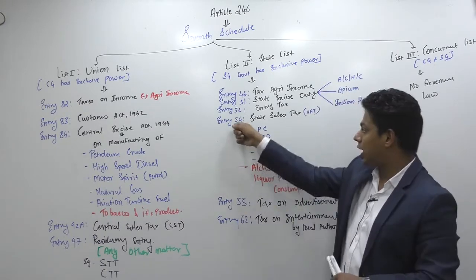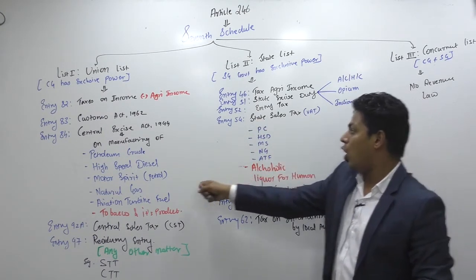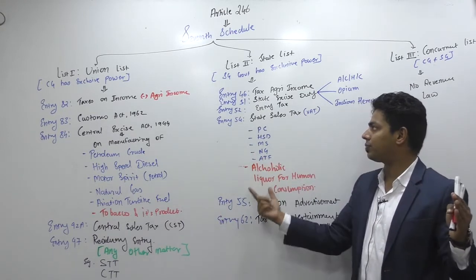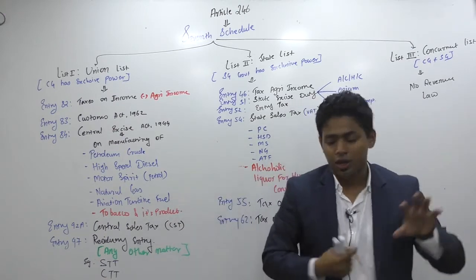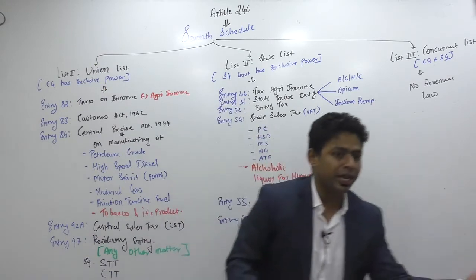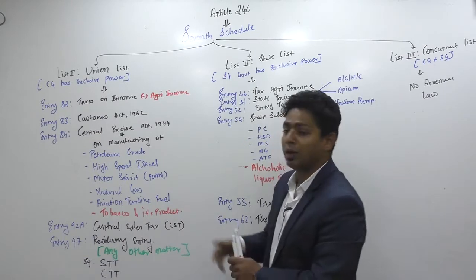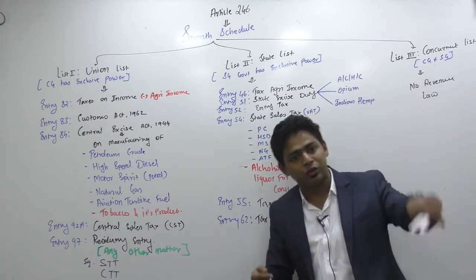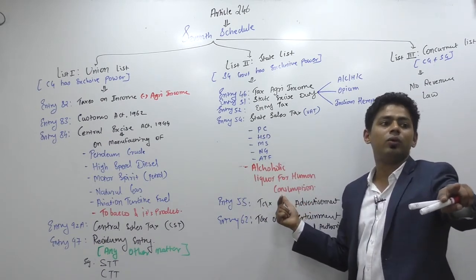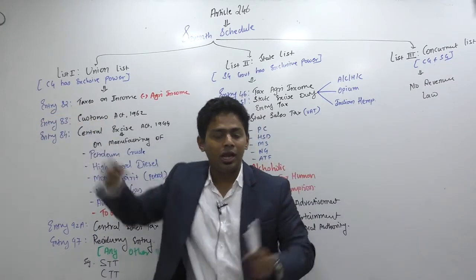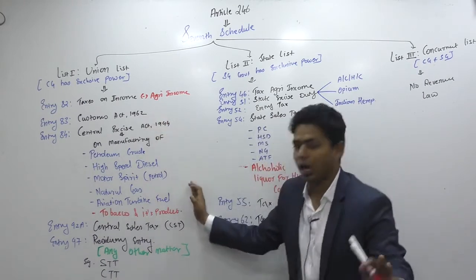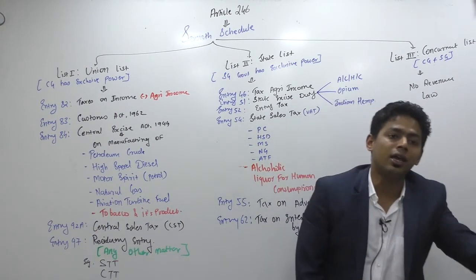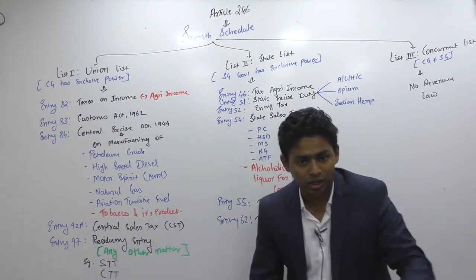On these five products, if manufactured, central takes excise. When you sell them, state takes VAT. For alcohol, manufacturing is with state and sale is also with state. But for petroleum, manufacturing is with central and sale is with state. So on these five products, central is taking excise and state is taking VAT. And when state takes VAT, it includes the excise duty in the base price.